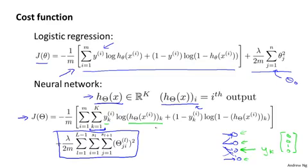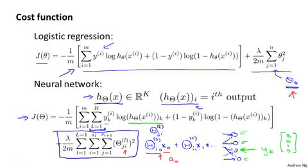This summation term looks really complicated but all it's doing is summing over these terms theta j i l for all values of i, j, and l except that we don't sum over the terms corresponding to these bias values like we had for logistic regression. Concretely, we don't sum over the terms corresponding to where i is equal to zero. So that is because when we're computing the activation of a neuron, we have terms like these: theta i zero plus theta i one x one plus and so on. This is the first hidden layer. And so the values of theta zero there corresponds to something that multiplies into an x zero or an a zero. And so this is kind of like a bias unit. And by analogy to what we were doing for logistic regression, we won't sum over those terms in our regularization term because we don't want to regularize them and push their values to zero.